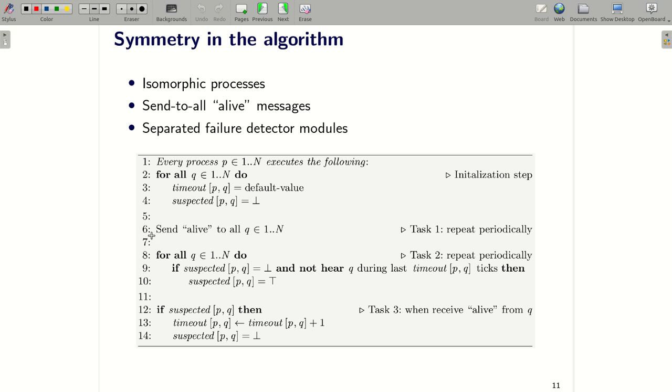Second, when a process needs to send a message, for example at line number 6, you can see that it can execute only send-to-all instructions. Moreover, the content of an alive message does not depend on delivered messages from other processes. So now, let's look at line number 9. You can see that the update of the local variable suspected PQ depends only on the messages from process Q and all information about process Q. And we have a similar thing when a process needs to update the value of suspected PQ at line number 12 here.